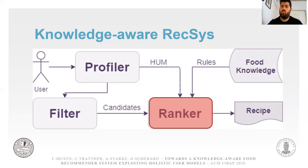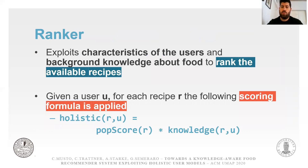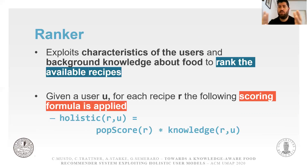Through the Ranker model, we try to identify the most suitable recipe for the user. In order to produce this ranking, the Ranker model implements a scoring formula. Our intuition is to exploit what we know about the user in order to identify the most suitable recipe. In particular, we calculate for each available recipe a formula that combines a popularity score — how popular that recipe is in general — with a knowledge-aware part that tries to understand how suitable that recipe is for the user given their characteristics.